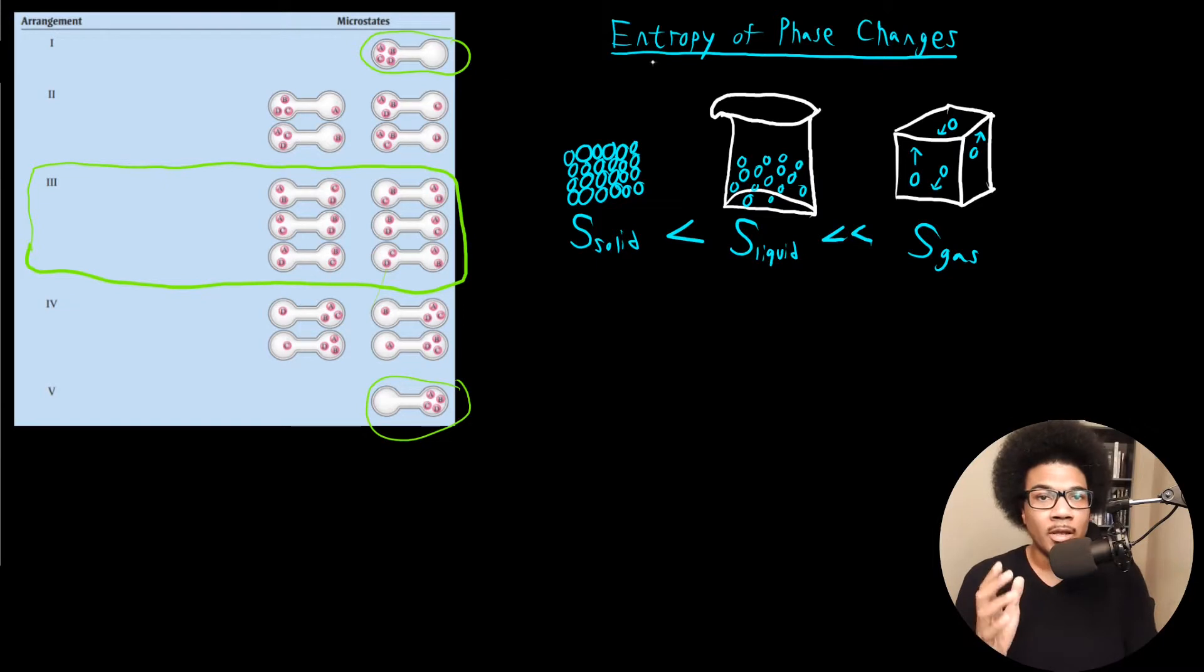Now, the last thing I wanted to touch on in this video is the entropy associated with phase changes. So keep in mind, our three main phases of matter are solid, liquid, and gas, and they look very different on a molecular level. Solids are very tightly, densely packed together. Liquids are relatively densely packed, but a little bit more loose than solids. And gases, of course, can bounce all over the place, and they really don't have any ordered structure to them. So that maps perfectly onto entropy. The entropy of a solid is going to be very, very low. The entropy of a liquid is going to be a little bit higher, and the entropy of a gas is going to be much, much higher.